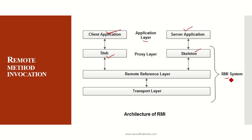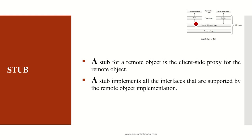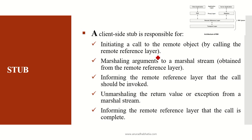A stub is an object that acts as a gateway for the client side. All outgoing requests are routed through it, so the client cannot directly interact with the server. It resides on the client side and represents the remote object. A stub for a remote object is a client-side proxy that implements all the interfaces supported by the remote object implementation. The client-side stub is responsible for initiating a call to the remote object by calling the remote reference layer.